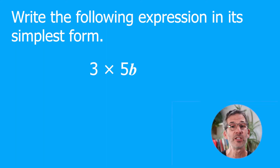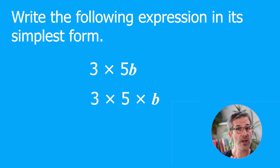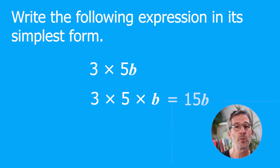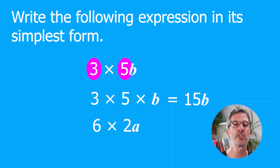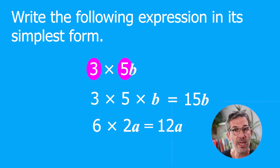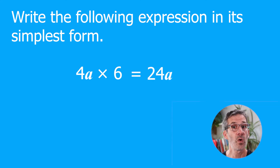Write the following expression in its simplest form: 3 × 5B. Since 5B means five times B, we can think of this as 3 × 5 × B. Three times five is 15, so this is 15B. All you have to do is multiply the coefficient — the number in front of the letter — by the other number. For example, 6 × 2a = 12a. If the order were different, say 4a × 6, we still just multiply 4 and 6 to give 24a.